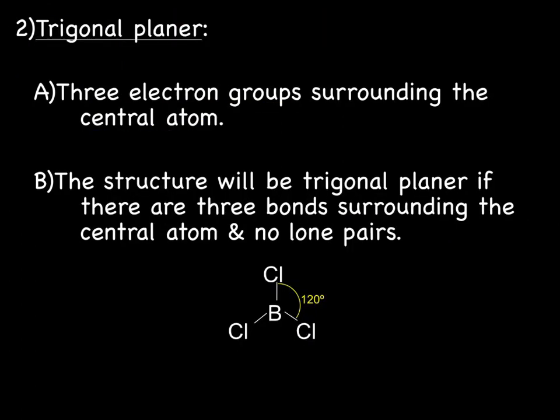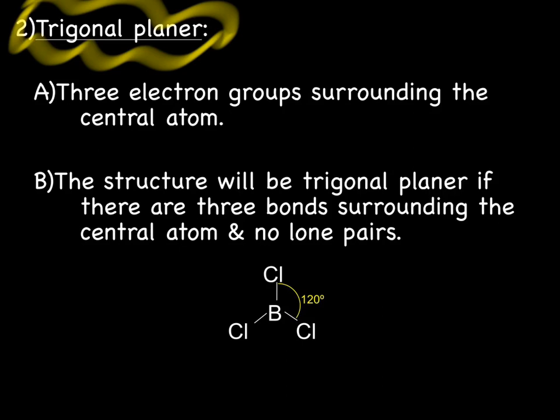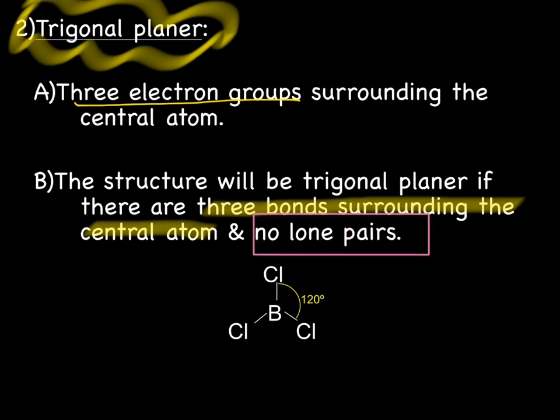The next shape is called trigonal planar. In the trigonal planar shape, there's going to be three electron groups surrounding the central atom. And those electron groups will be in the form of bonds surrounding the central atom. There will be no lone pairs. So down below I show you a picture of a Lewis dot structure of boron trichloride. You have the central atom which is going to be the boron, and there are three electron groups surrounding that boron. You've got the chlorine bond, the chlorine bond, and the chlorine bond. And you will note that there are no lone pairs. Huge part of trigonal planar.